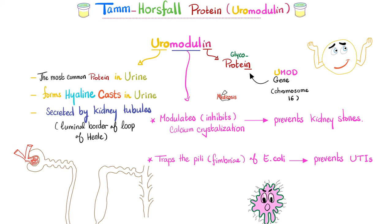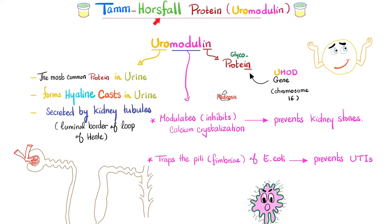Now let's talk about the function. As sophisticated textbooks note, the exact function of uromodulin is not yet fully understood. However, there are some hypotheses. Uromodulin may modulate — in this case inhibit — calcium crystallization. No crystals means less risk of stones, because it's crystals that precipitate and increase the risk of stone formation. Moreover, uromodulin might trap the pili or fimbriae of E. coli, the most common cause of urinary tract infection. By trapping that bacteria and destroying one of its virulence factors, it helps prevent urinary tract infections. It's a very good protein.